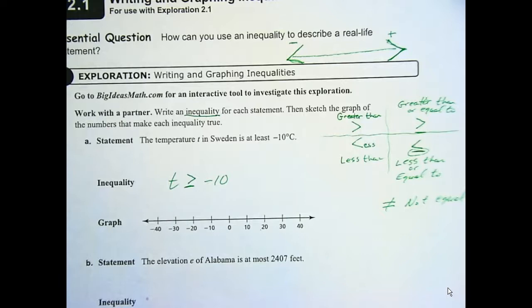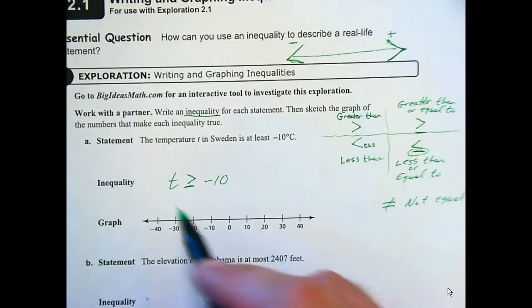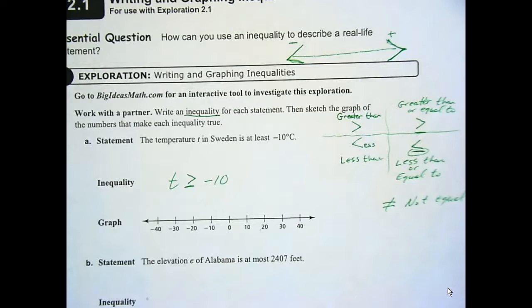Could it be negative twelve? No. No. Okay, that's smaller. Could be, yeah. So it could be anything bigger than negative ten. Like, could it be a hundred? Yes, it could be a hundred. Because that's at least negative ten. The least it could be is negative ten.